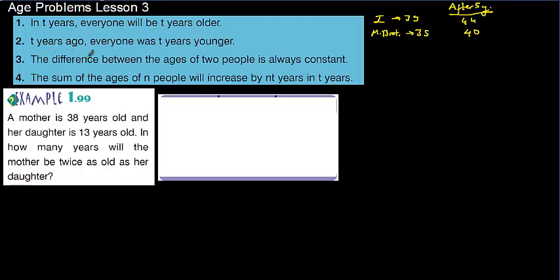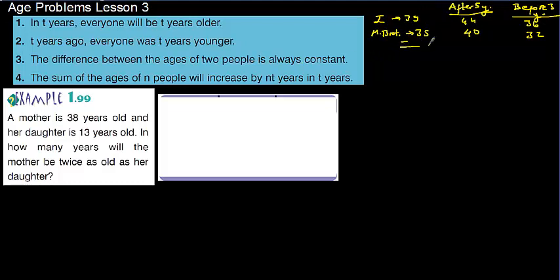The second rule is T years ago. For example, before 3 years, I was 36 and he was 32. And the difference between the ages of two people is always constant. Now our age difference is 4 years.